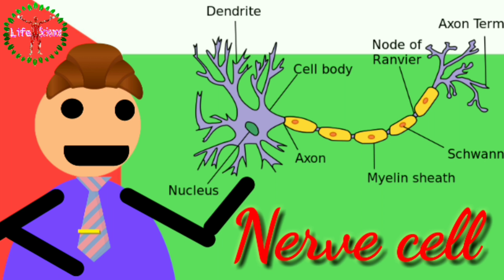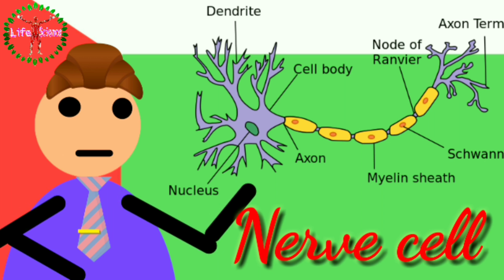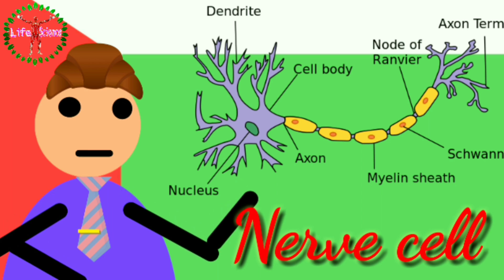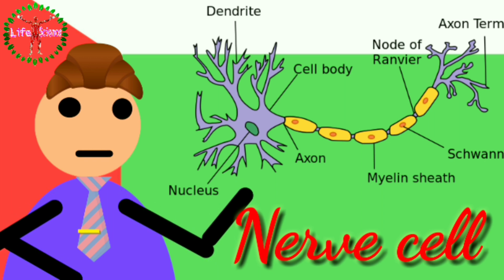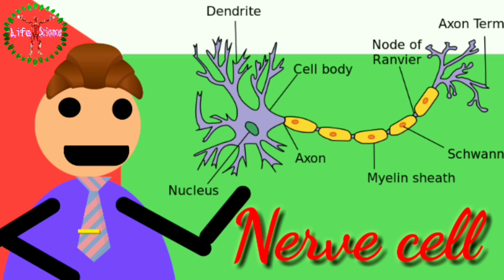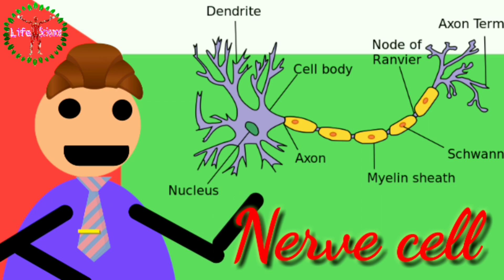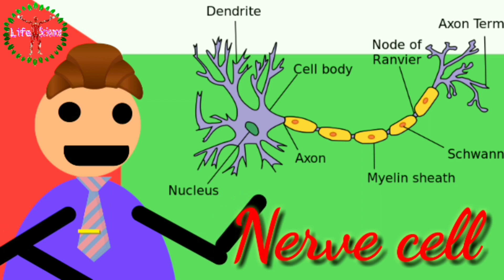This is a nerve cell, or neuron. It has three parts: dendrite, cell body or soma, and the last one is the axon.